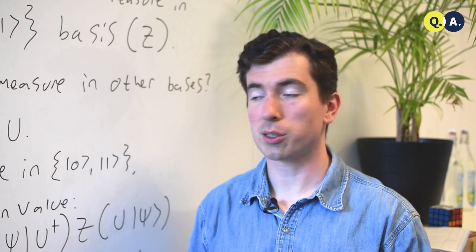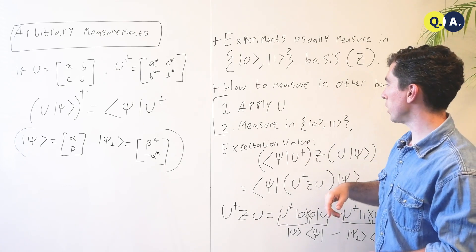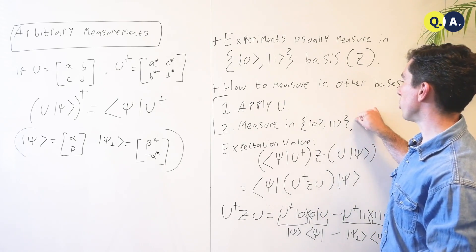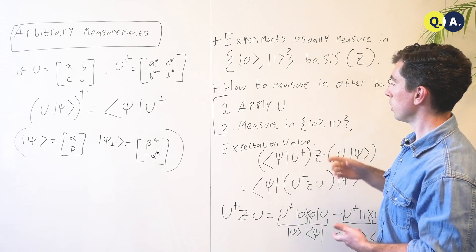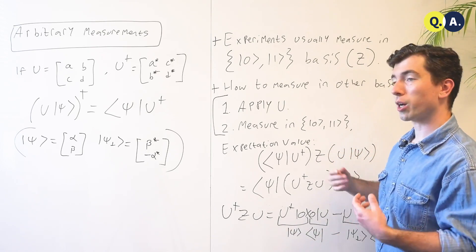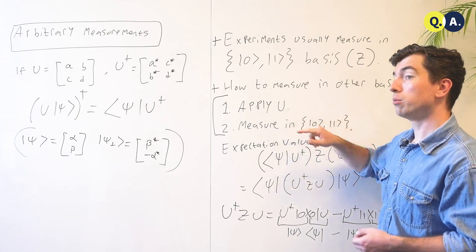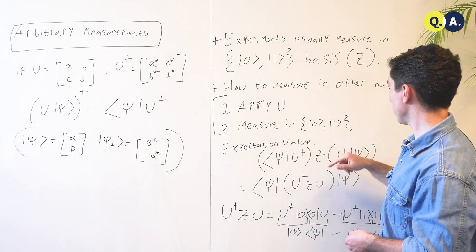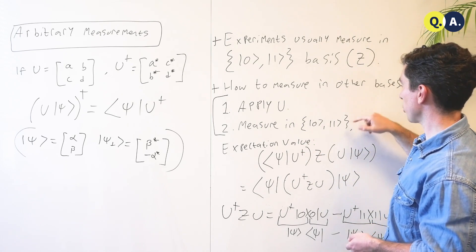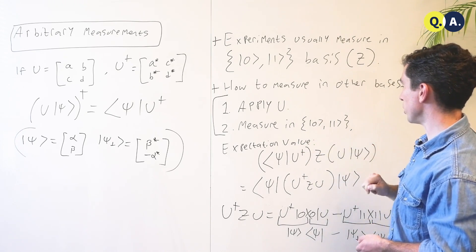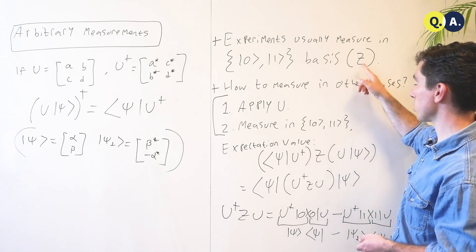So we have a two-step plan to solve this. First, we're going to apply some operator U, and then we're going to measure in the zero-one basis. Now, if you've got a controllable qubit, you can apply an operator U as you see fit, and as discussed in the statement of the question, we can measure in the zero-one basis — we can measure the Z operator.